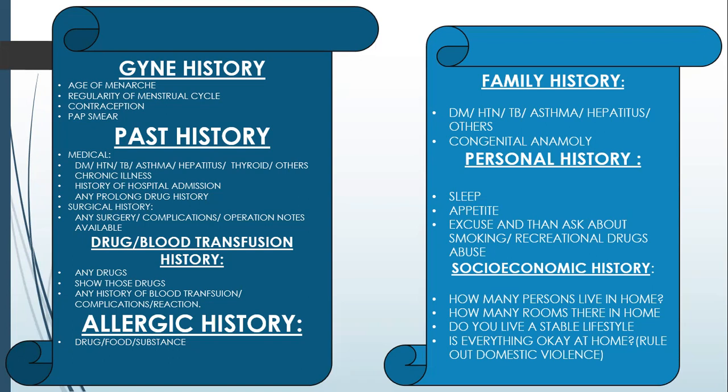In the drug and blood transfusion history, ask about any history of drug intake. If the patient is unable to recall the drug name, politely ask if they can show you the drugs. You should know the color or dose of important drugs used in Ops — for example, the yellow tablet, or the white single tablet taken early morning before breakfast for thyroid disease is thyroxine. The blue-colored medicine is glucophage, taken for diabetes. So you should know about the description of drugs as well. Ask about any history of blood transfusion, its complications, and reaction if it has occurred.